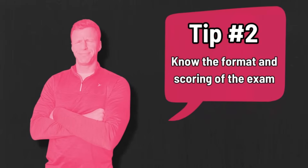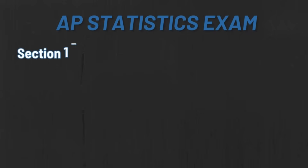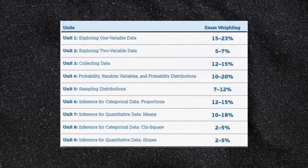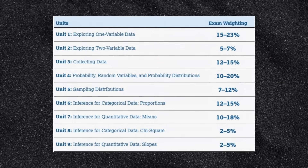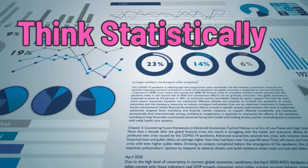Tip number two: know the format and scoring of the exam. The entire exam will take roughly three hours and 15 minutes, broken up into two sections. The first section is multiple choice — 40 questions, 90 total minutes to complete them. This section is worth 50% of your total grade, so every single question is worth 1.25 points towards your final composite score. Here's a breakdown of how those multiple choice questions are scattered throughout the nine units. While taking those 40 questions, keep in mind to think statistically.